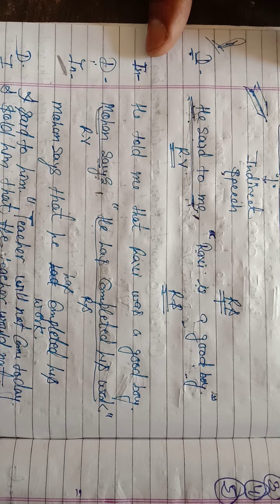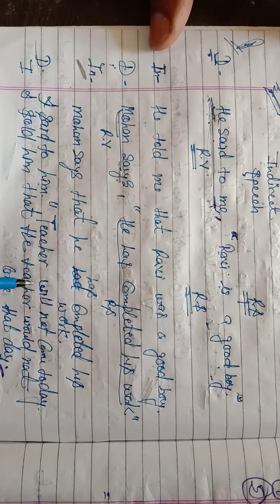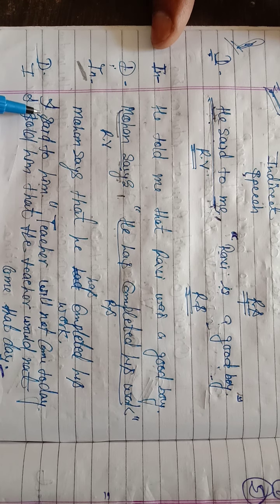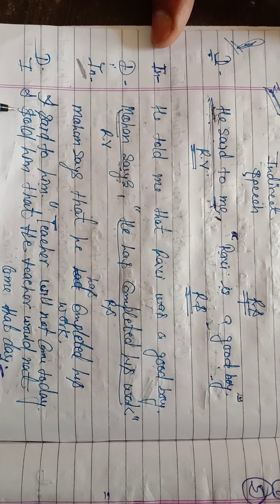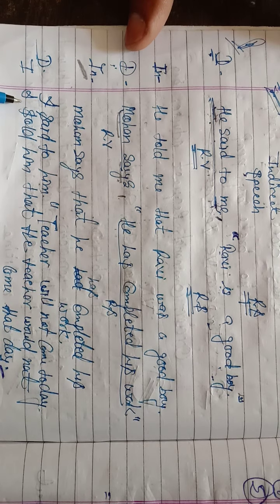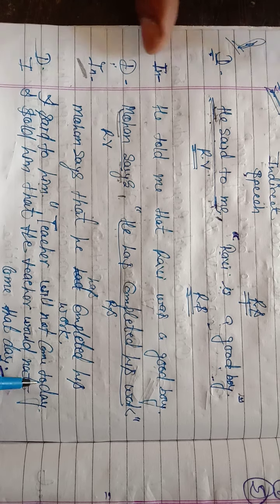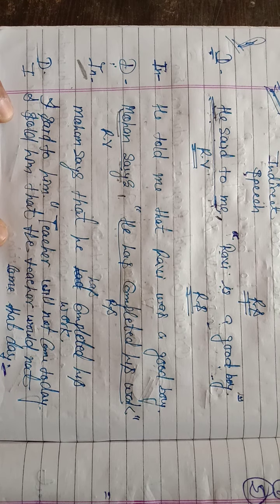Another example: 'I said to him, Teacher will not come today.' Here 'I said to him' is the reporting verb, and 'Teacher will not come today' is the reported speech. In indirect: 'I told him that the teacher would not come that day.'